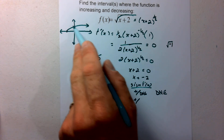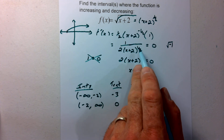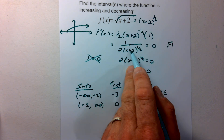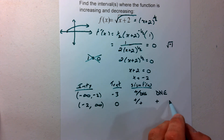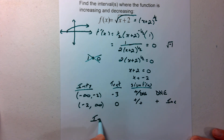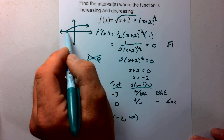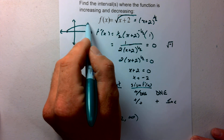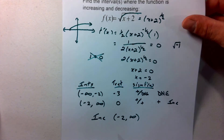Plugging in 0 for the second interval: 0 plus 2 is 2, and 2 to the one half is a positive value. So we get positive over positive, which means increasing. We only get an increasing interval from negative 2 to infinity. That makes sense because from negative 2, the function continually goes up as we move toward infinity.